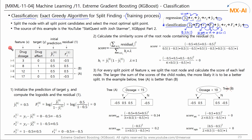Let's use this data as an example. The source of this example is XGBoost Part 2 on YouTube's StatQuest. There is only one feature X and a target class Y for binary classification. Class 0 means no, and class 1 means yes. This is very simple data consisting of a total of four data points.